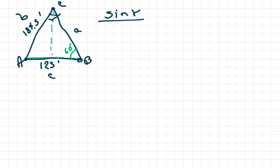So sine of gamma over 123 feet equals sine of 60 degrees over 184.5 feet.